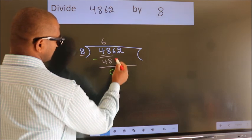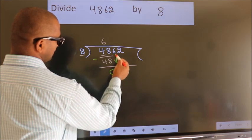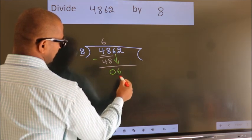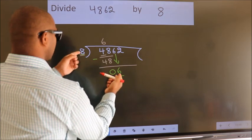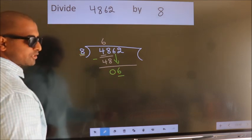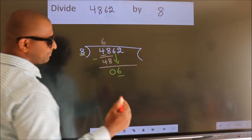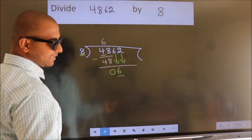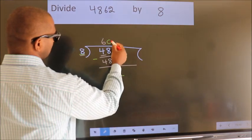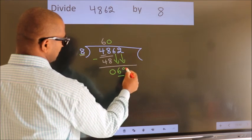After this, bring down the beside number. So 6 down. Here we have 6, here 8. 6 is smaller than 8, so we should bring down the second number. And the rule to bring down the second number is put 0 here. Then only we can bring down this number.